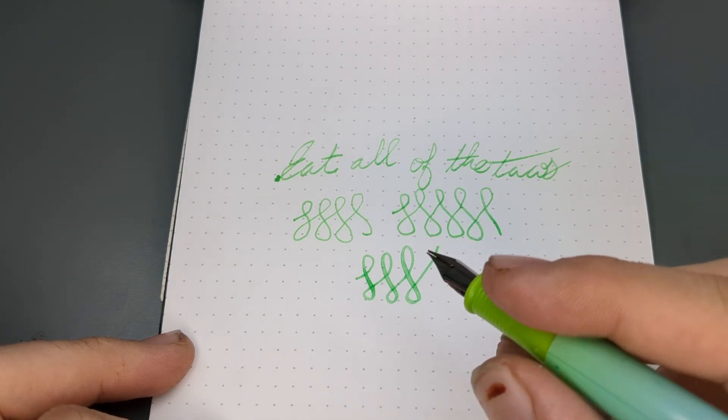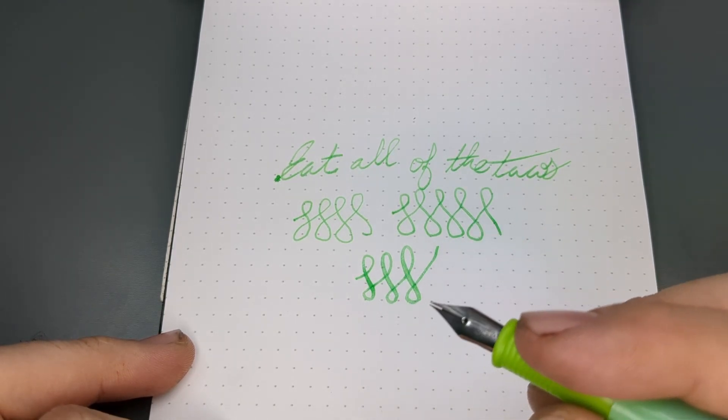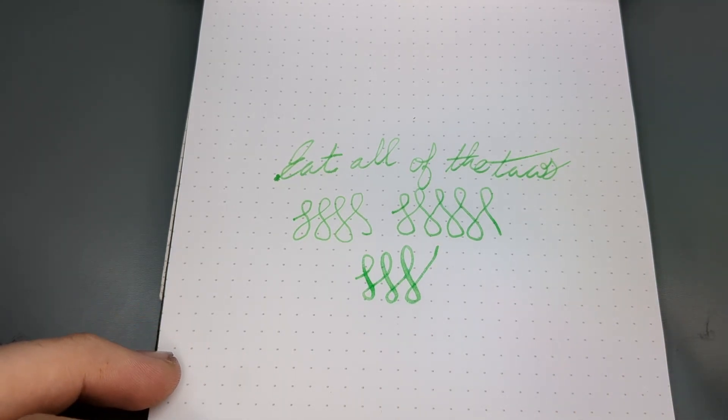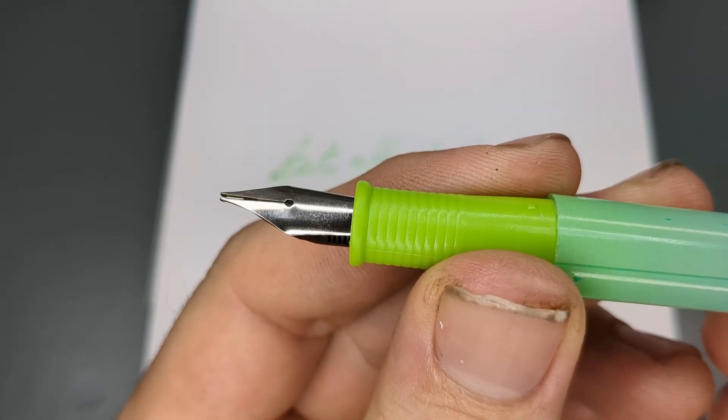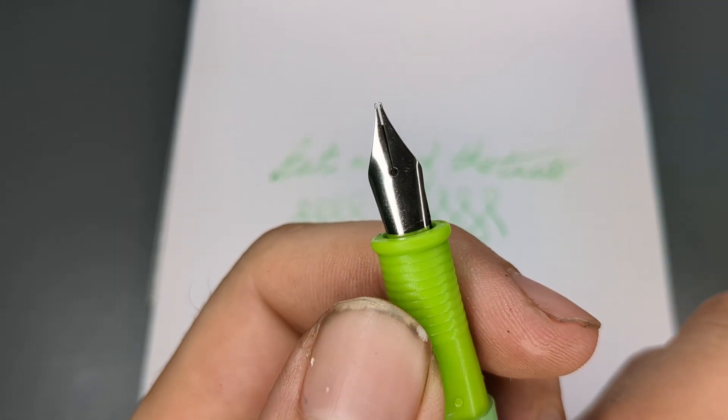And if you add too much pressure, the tines can spread out and not return back to their original position, which will cause the ink to stop flowing and the pen will no longer write. Which we have now done. The tines of the nib are now spread enough, the ink will no longer flow.